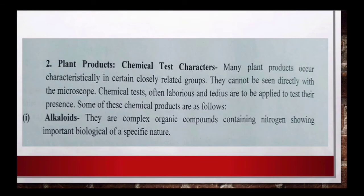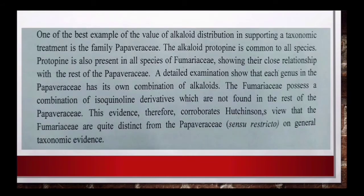Alkaloids क्या होते हैं - यह nitrogenous complex organic compounds हैं, और यह भी important character show करते हैं different species में। जैसे Papaveraceae में alkaloids पाए जाते हैं - Papaveraceae family में alkaloids का पाया जाना बहुत important character है। Papaveraceae में protopine नाम का alkaloid सभी species में पाया जाता है। Protopine Fumaricaceae के भी कुछ species में पाया जाता है, जिससे यह show होता है कि Fumaricaceae family, Papaveraceae से काफी close है। लेकिन Fumaricaceae में isoquinoline derivatives भी होते हैं जो Papaveraceae में नहीं पाए जाते, इसलिए इसको अलग-अलग families में रखा गया है - Hutchinson ने इसी आधार पर इनको अलग-अलग रखा था।